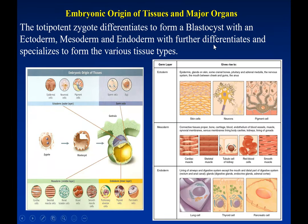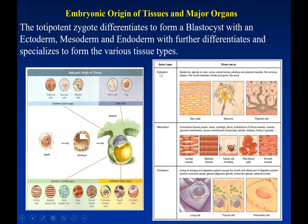These four tissues arise from embryonic origins. When a sperm cell and egg cell fertilize to form a zygote, it undergoes divisions to form a structure called a blastocyte, which has three main layers: ectoderm, endoderm, and mesoderm. Ecto means outside, so ectodermal cells differentiate to form skin cells, neurons, and pigment cells. The mesoderm differentiates to form all muscle tissue — cardiac, skeletal, smooth — and blood cells. The endoderm differentiates to form epidermal cells, neural cells, and some pigment cells.